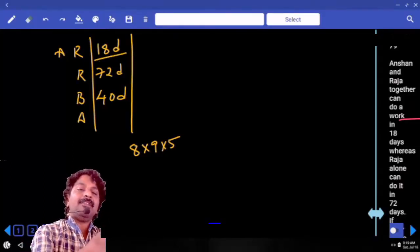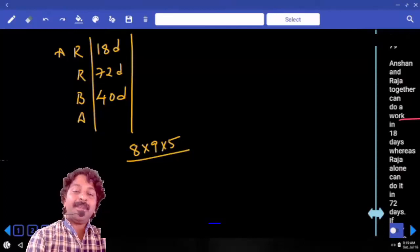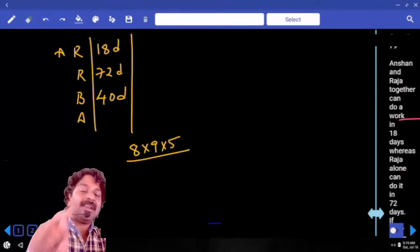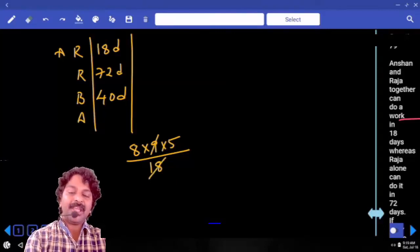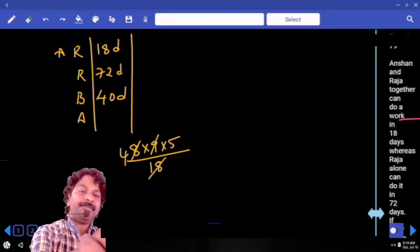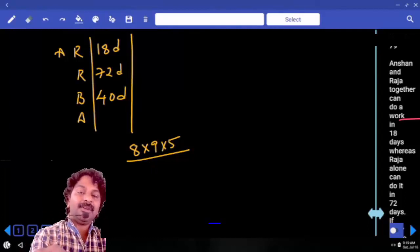Now, total work is done in how many days? Anshan and Raja takes 18 days. So, divided by 18 only, 9, 2 times, 2, 4 times, 40 to 5. 20 units.